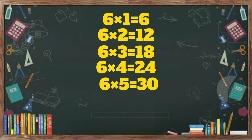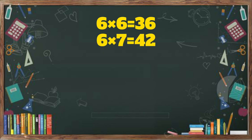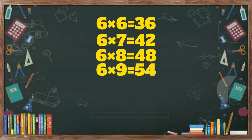6 5 the 30. 6 6 the 36. Six sevens a forty-two. Six eights a forty-eight.